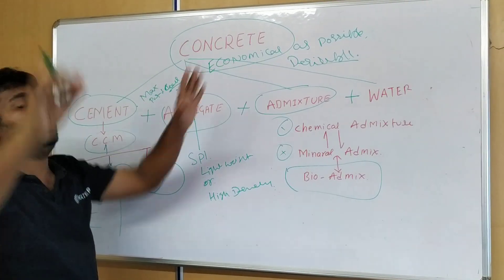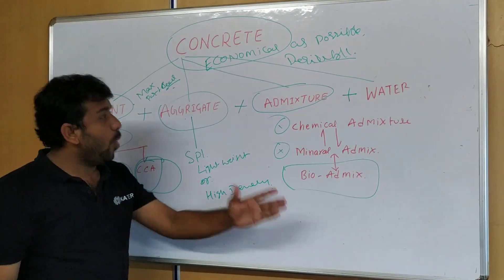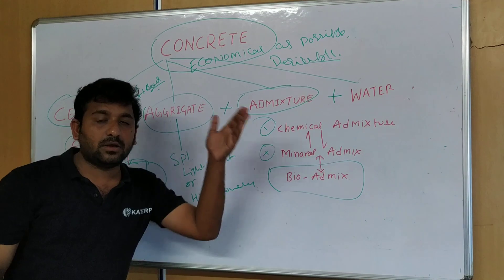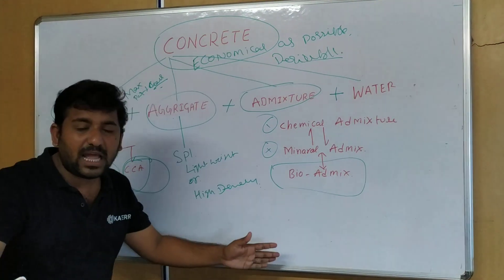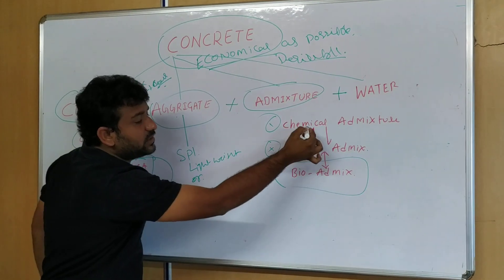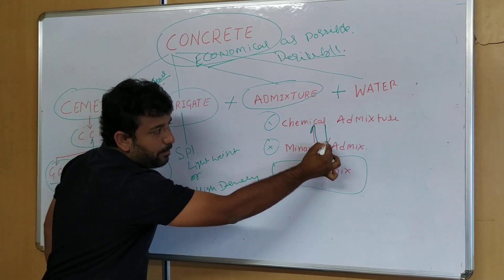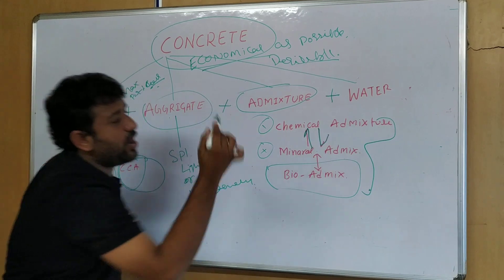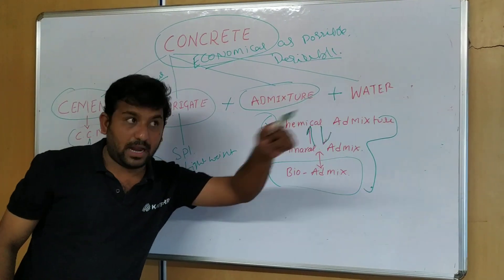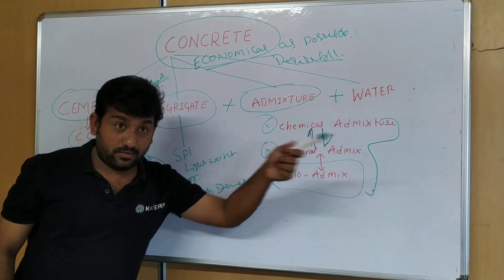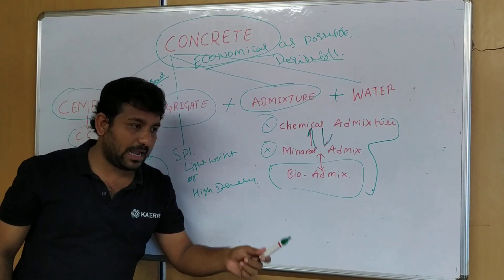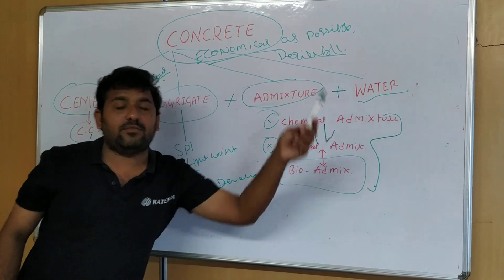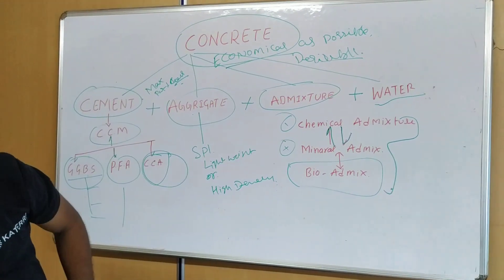What I want to explain specifically is only the replacing of cement, and along with that, how to interchange, replace, and modify properties — with an economical effect — by changing chemical admixtures to mineral admixtures, mineral admixtures to chemical admixtures, and sometimes replacing both with bio-admixtures. The rest is water, and water also has its own role in implementing both economy and the quality we are desiring.